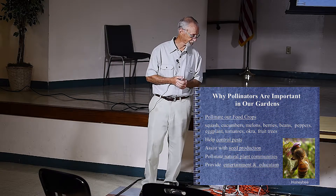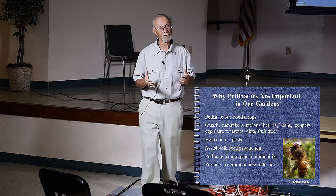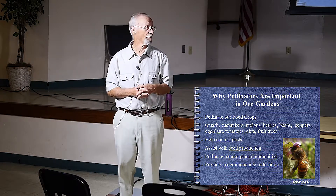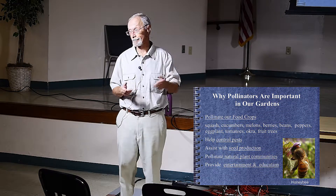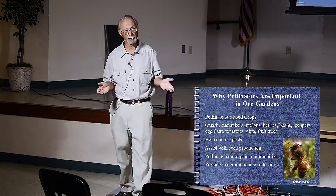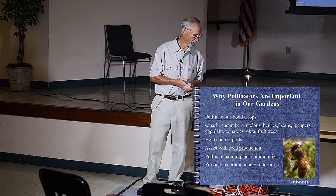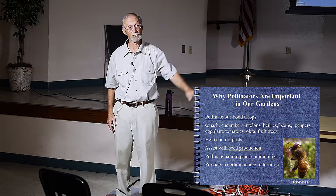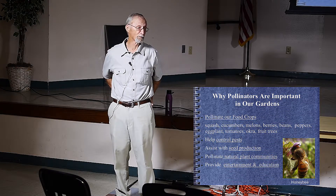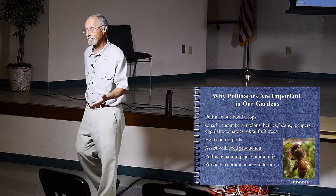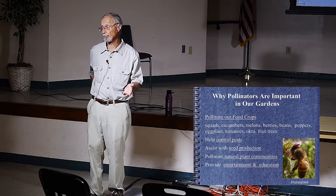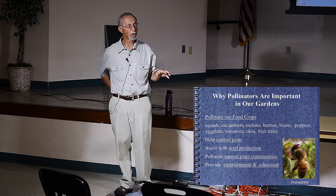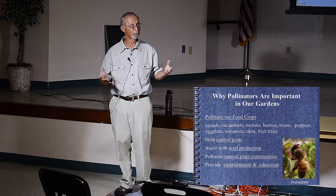Seed production requires pollination. If you want seed from the plants in your garden, whether they're flowers or vegetables, you must allow the plant to go to flower and then it has to be pollinated — seed production is totally dependent on pollination. Natural plant communities also depend on this: plants in our natural preserves that flower and fruit require pollination. For those communities to stay healthy, there have to be a lot of wild pollinators around. Native bees and all native insects have to be active in the ecosystem — they're an essential part of the whole environmental integrity.